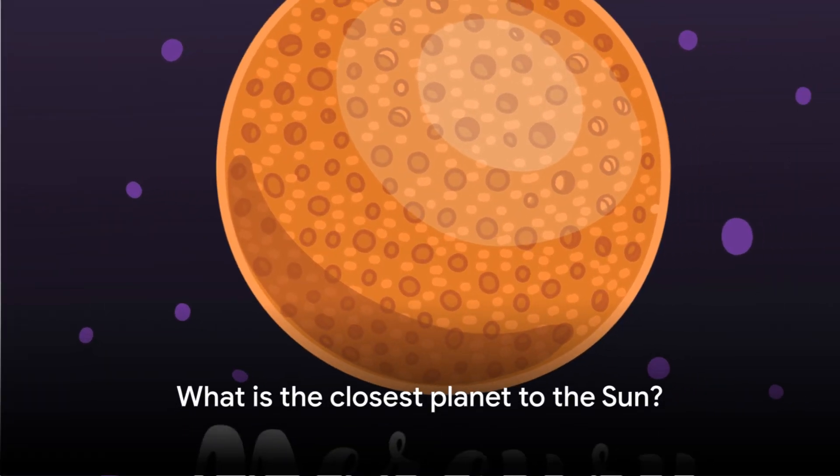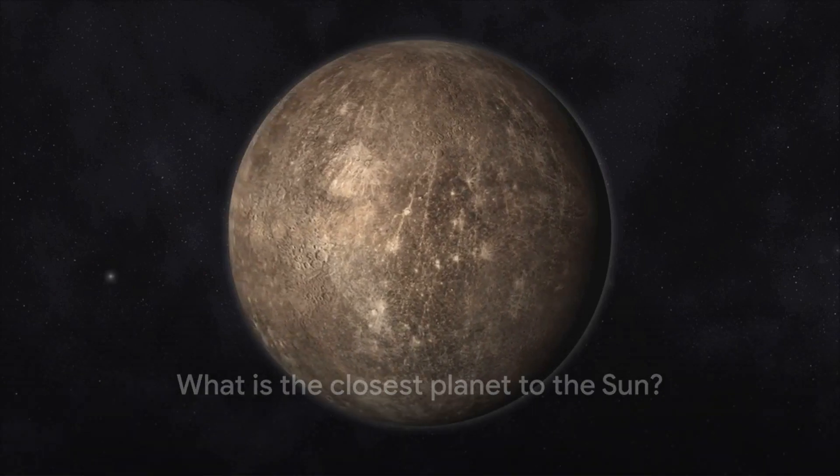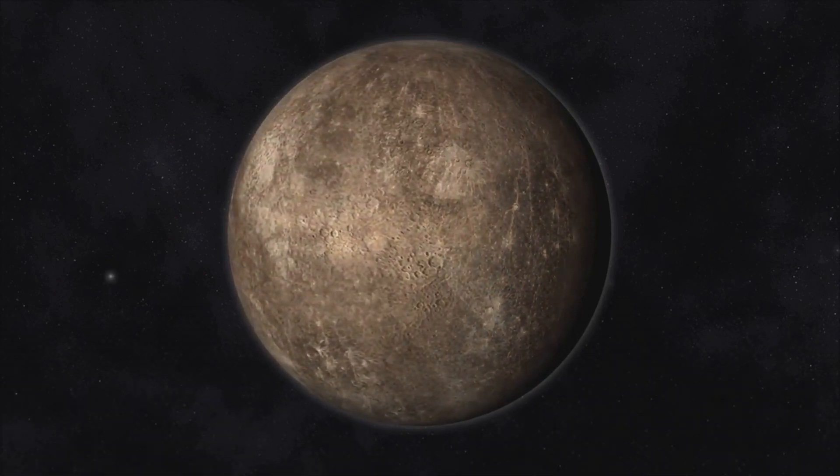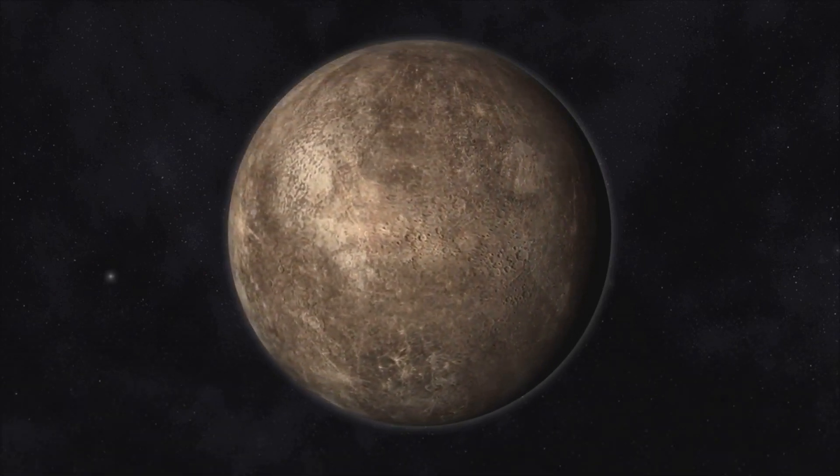Mercury is the closest planet to the sun. It orbits at an average distance of about 36 million miles, 58 million kilometers, from the sun.